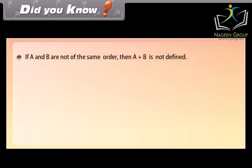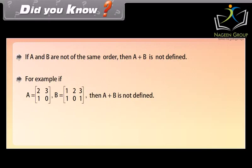Did you know: If A and B are not of the same order, then A plus B is not defined. For example, if A is equal to row-wise 1st row 2, 3, 2nd row 1, 0, and B is equal to row-wise 1st row 1, 2, 3, 2nd row 1, 0, 1, then A plus B is not defined.